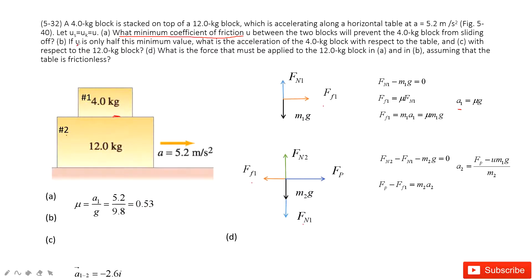For the second question, if mu becomes half of 0.53, what is the acceleration of number one? The acceleration of number one equals mu times g. Since mu becomes half, the acceleration also becomes half — that is 2.6 m/s². So we need to find the acceleration of number one relative to number two.